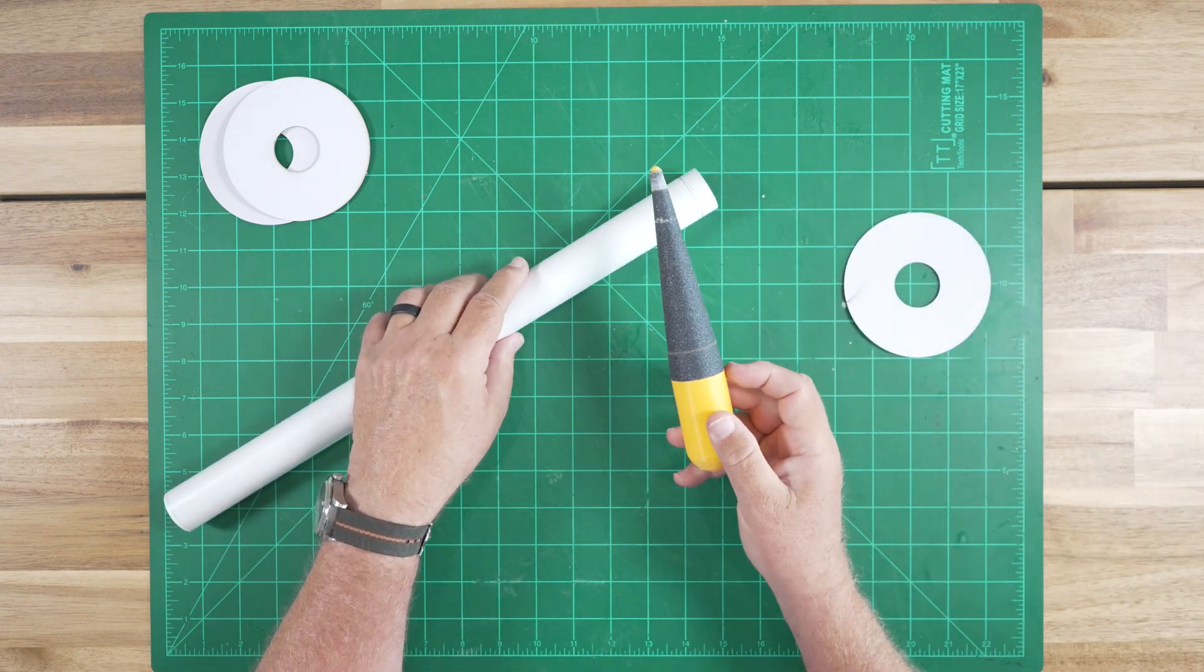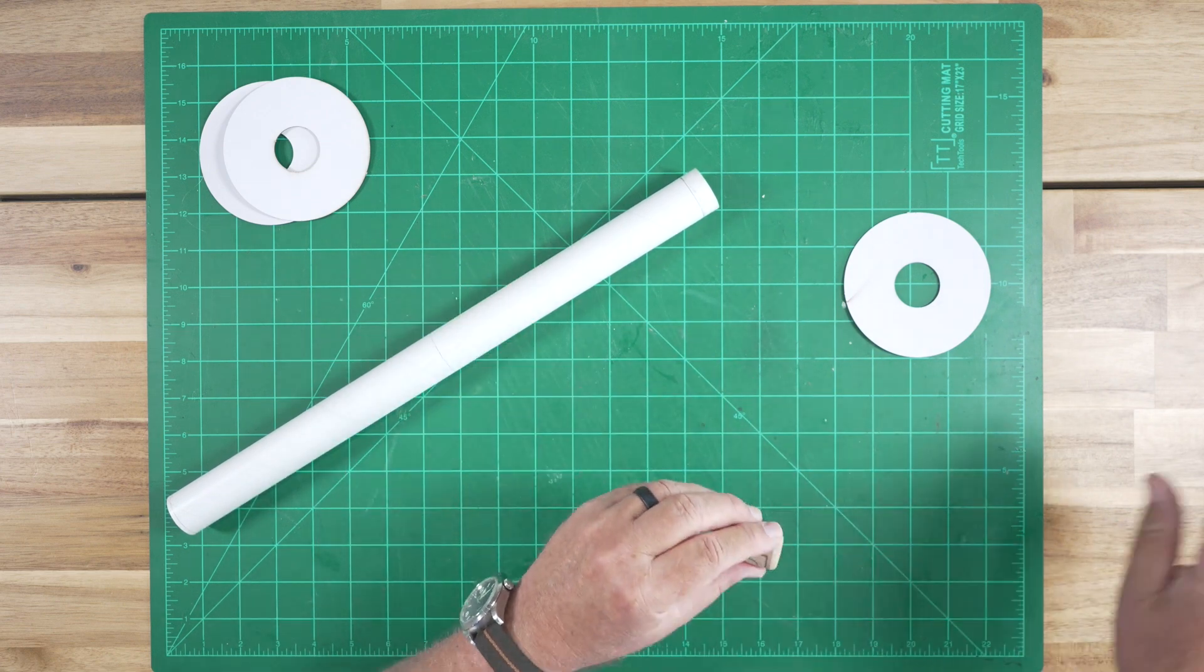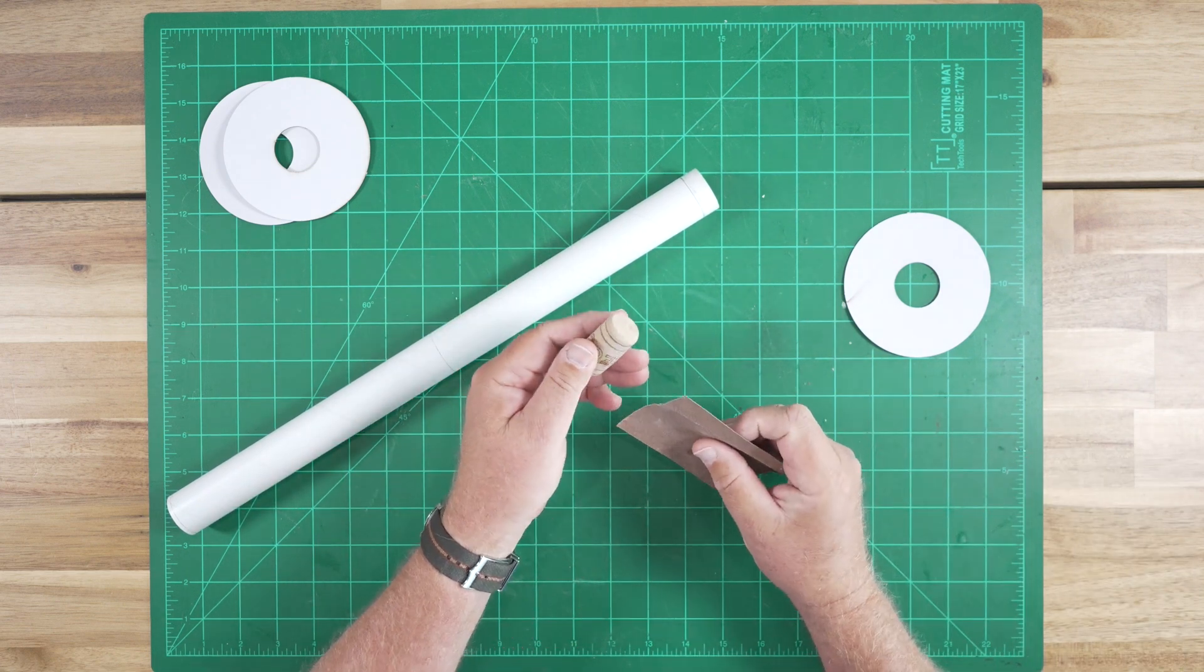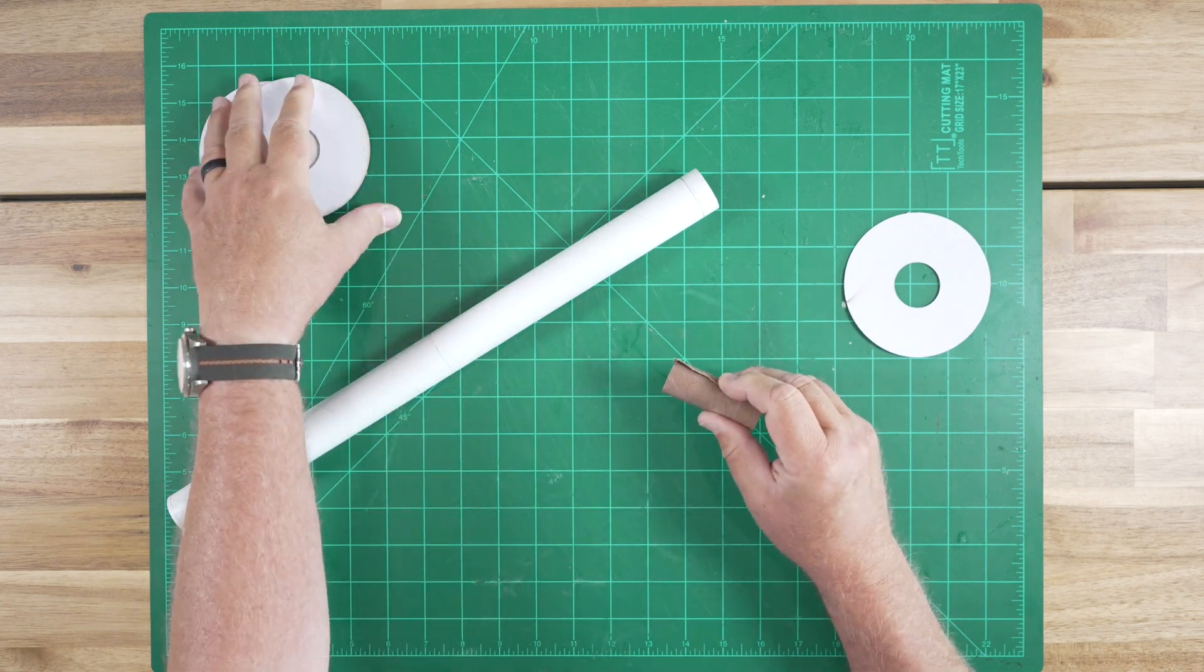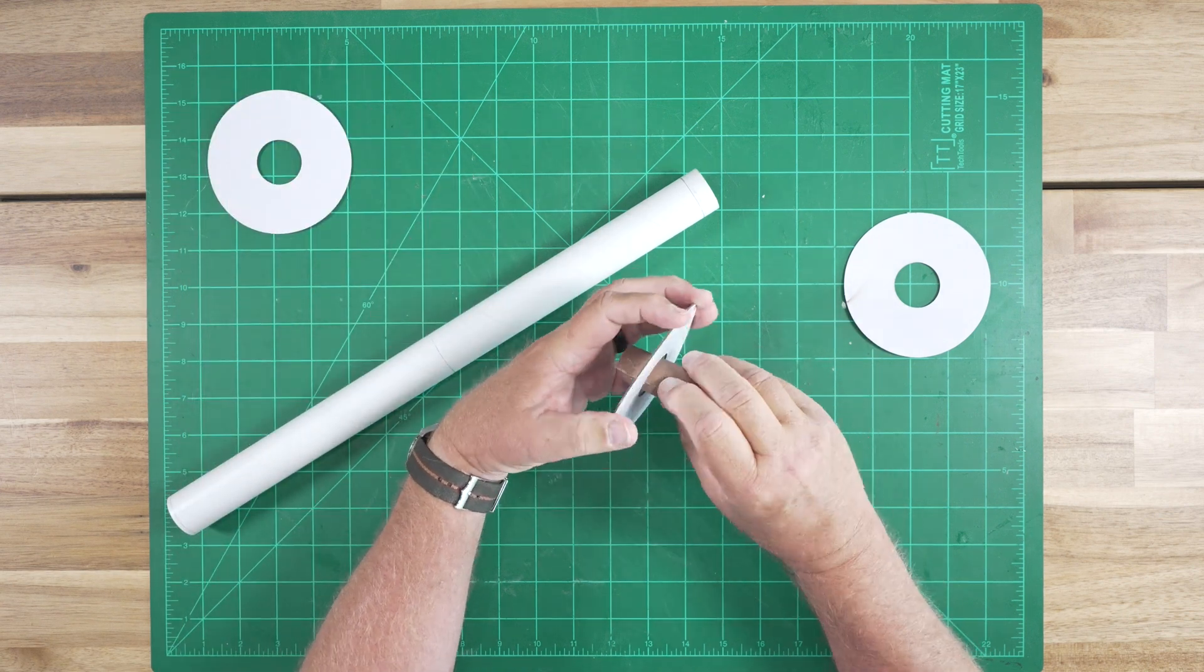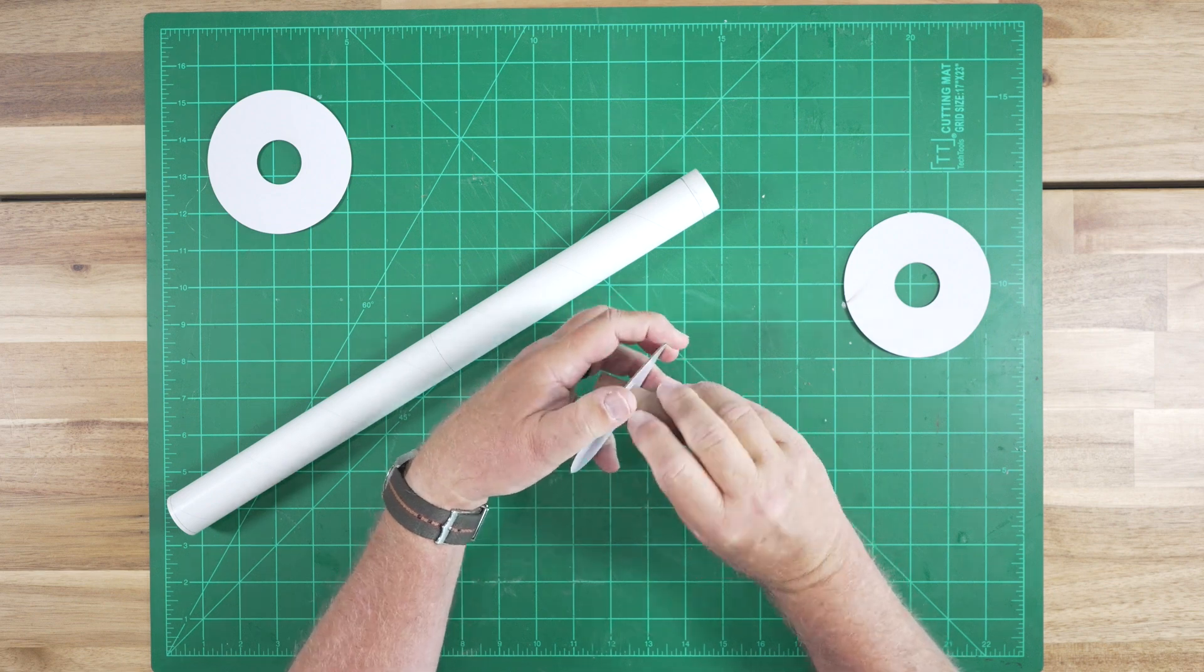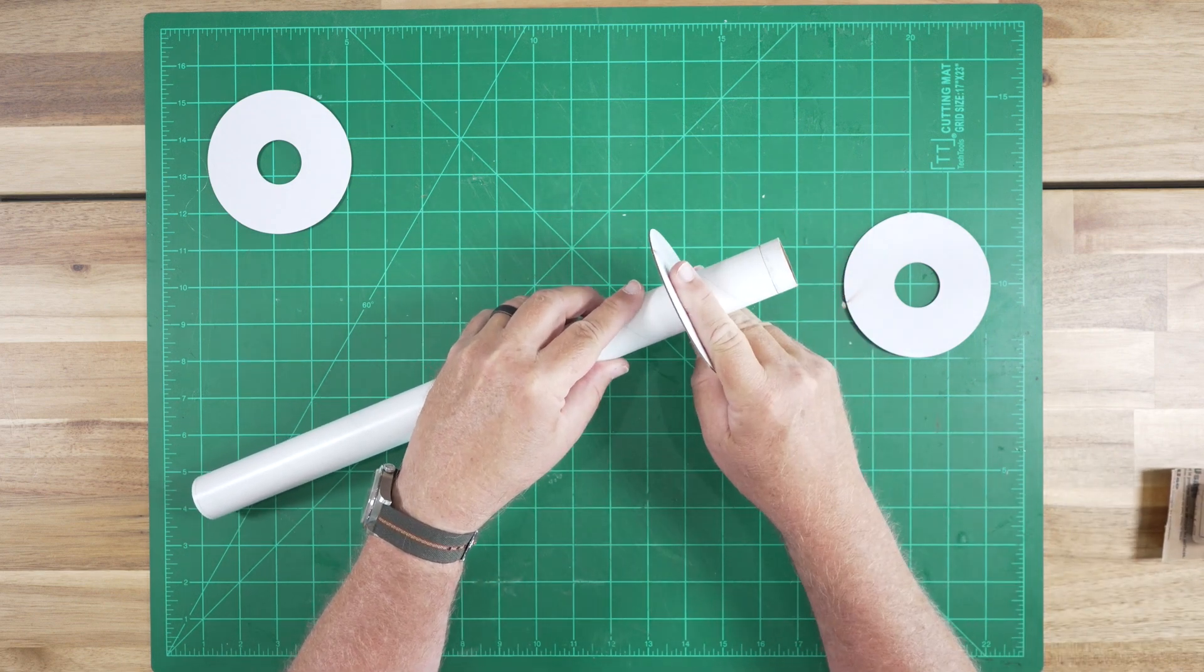Now, if you don't have a 3D printer or a fancy tool, you can use a wine cork with a piece of sandpaper wrapped around it. It'll work just as well. Here's our second ring. Just a few passes on the interior. And then we can check the fit. Works great.